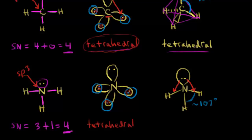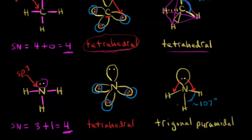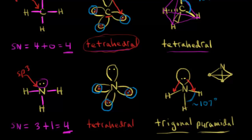In terms of the shape of the molecule, we don't say tetrahedral — we say trigonal pyramidal. The geometry of the ammonia molecule is trigonal pyramidal. Trigonal refers to the fact that nitrogen is bonded to three atoms. Pyramidal comes in because when you determine molecular geometry, you ignore lone pairs, and the nitrogen sits at the top of a pyramid bonded to three hydrogens. The nitrogen is sp3 hybridized.